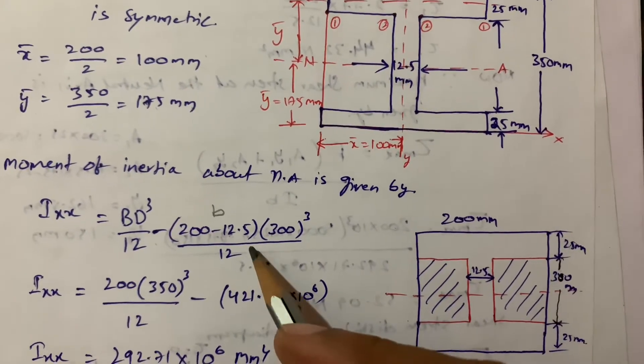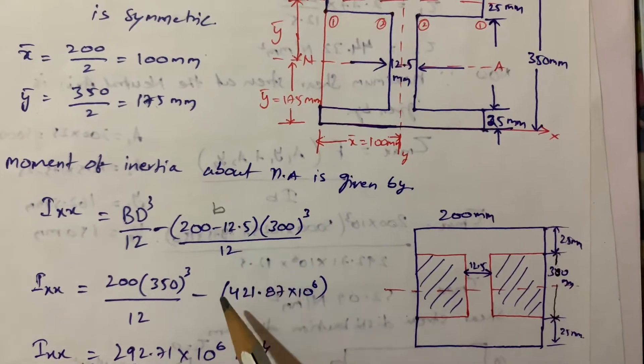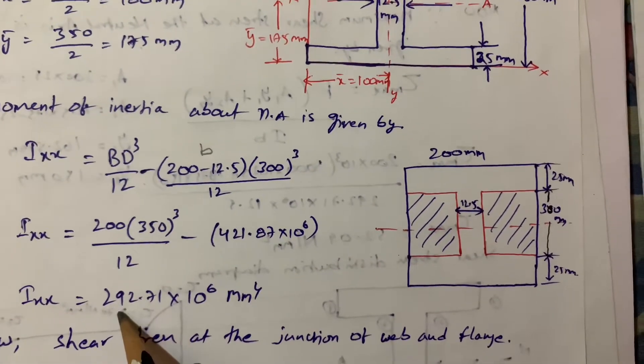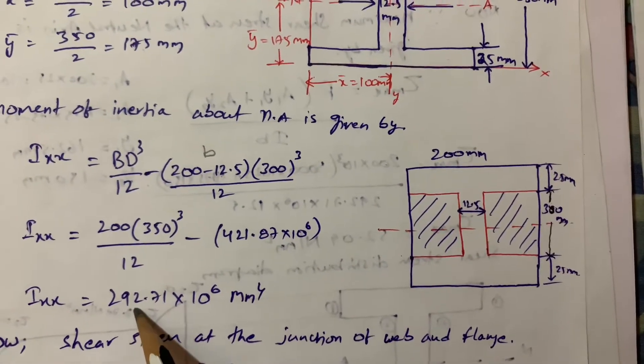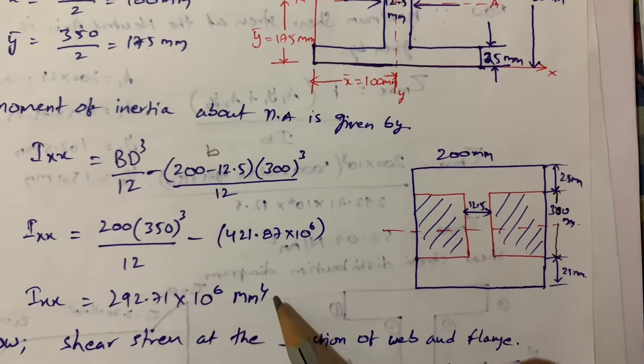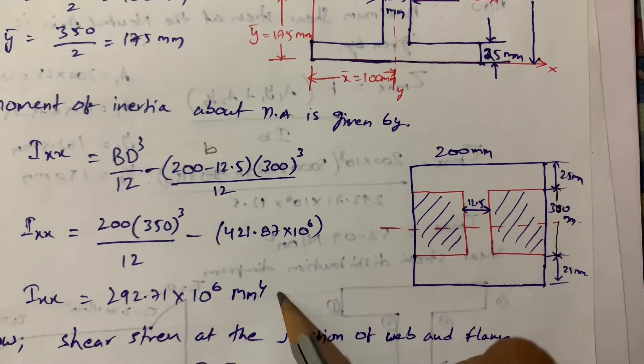Dividing by 12, I_xx = 292.71 × 10⁶ mm⁴.